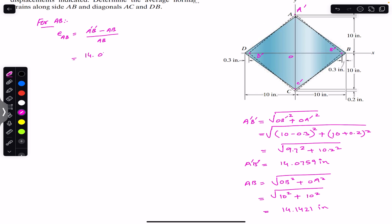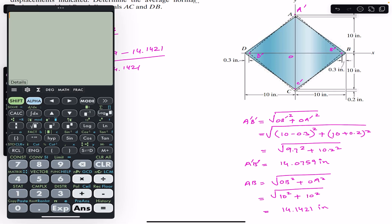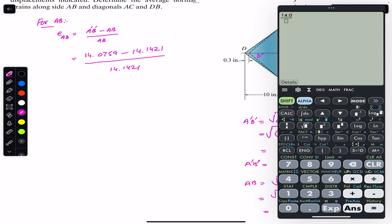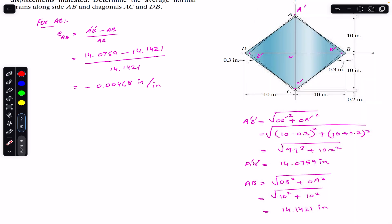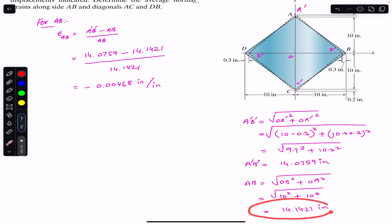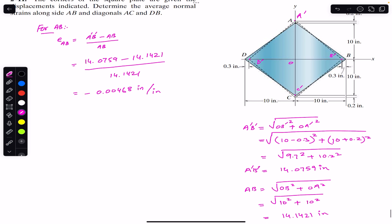The strain along AB equals A dash B dash minus AB divided by AB: (14.0759 minus 14.1421) divided by 14.1421, which gives minus 0.00468 inches per inch. The negative sign indicates that the final length after displacement is less than the initial length, so final minus initial gives a negative result.